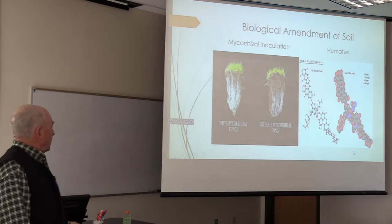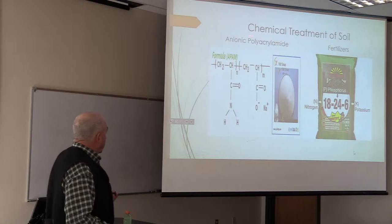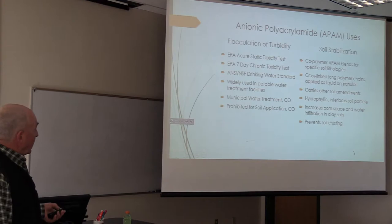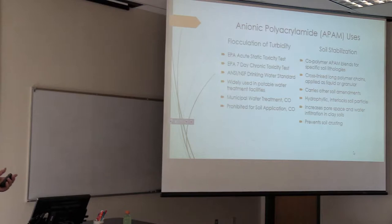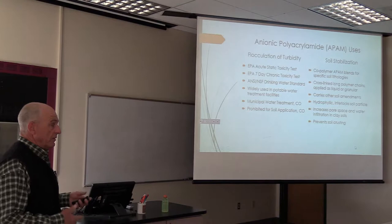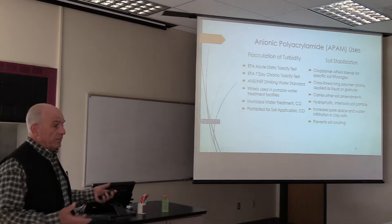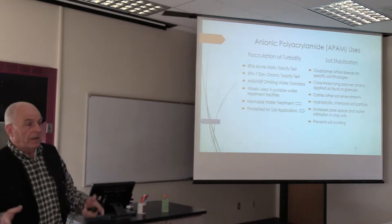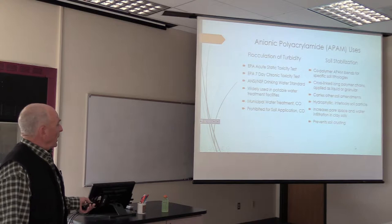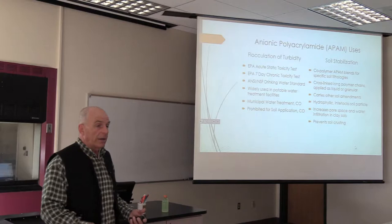We have used on many occasions anionic polyacrylamides — APAMs. This is a very controversial chemical treatment of soil. APAMs have been used in flocculation of turbidity and have undergone decades of testing for toxicities, both acute and chronic. They've been approved for drinking water treatment of potable waters. Interestingly, in Colorado, they can use APAMs to treat potable water but cannot use them as a soil amendment — so we can drink this product but can't walk on it. That's quite a conundrum worth investigating.